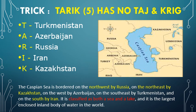Now let us see the map of the Caspian Sea. This is the Caspian Sea touching Russia, Kazakhstan, Turkmenistan, Iran, and Azerbaijan. The Caspian Sea is bordered on the northwest by Russia, northeast by Kazakhstan, west by Azerbaijan, southeast by Turkmenistan, and south by Iran.